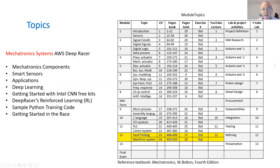We'll also talk about deep learning. We'll get started with Intel convolutional neural network free kits. Then the DeepRacer reinforced learning process — we'll take a look at how this has been done, along with a sample Python training code for the reinforcement program which is used in the car. And then we'll see how we can get started with the Amazon DeepRacer car.